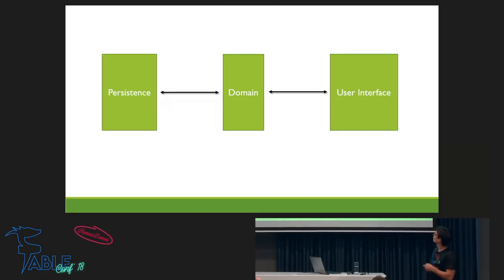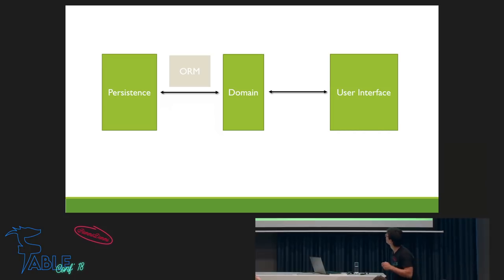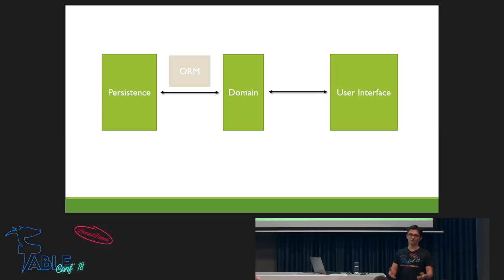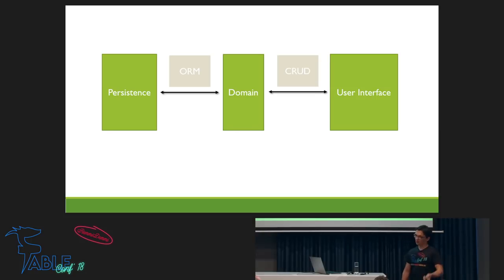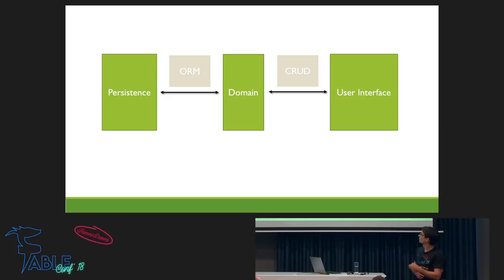We have a persistence layer, a domain layer, and a user interface. The persistence and the domain are mostly connected with an object-relational mapper — most of us know this, like Hibernate, Doctrine, whatever you're using. A lot of applications, especially older ones, use a CRUD interface to connect the user interface with the domain. CRUD is create, read, update, delete.